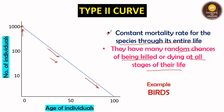The example of the Type 2 curve is birds. In early ages there are more birds, but they have a high chance of dying at any stage — they can get stuck in wires, be killed by man-made things, or die through many natural ways. So birds have a high chance of being killed at all stages of their life.